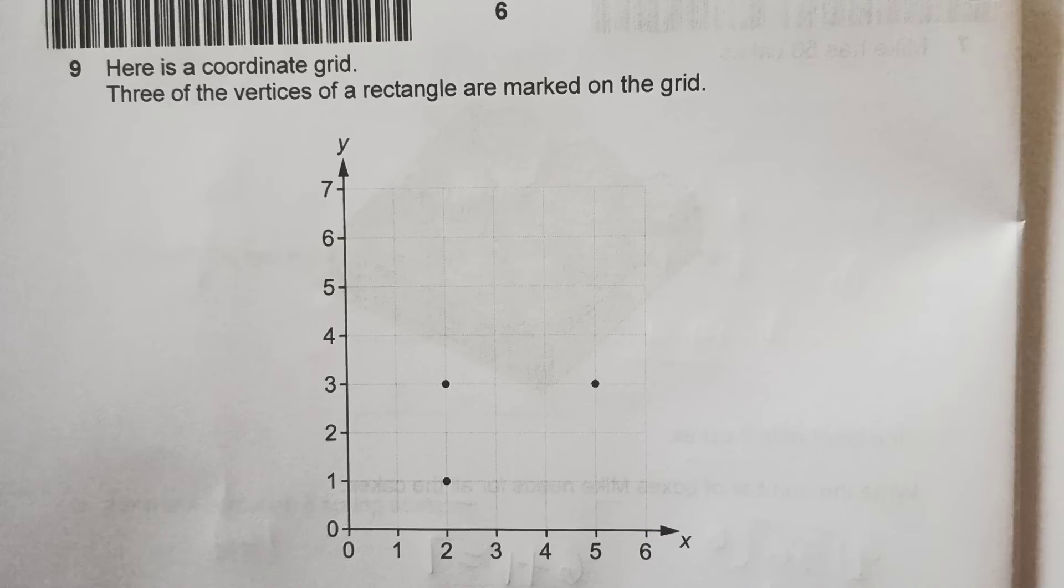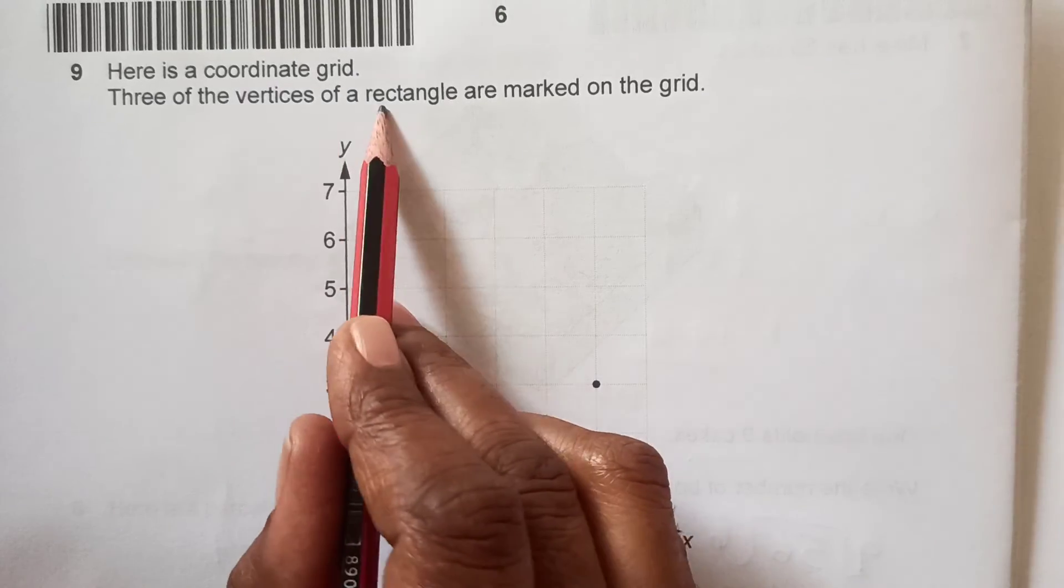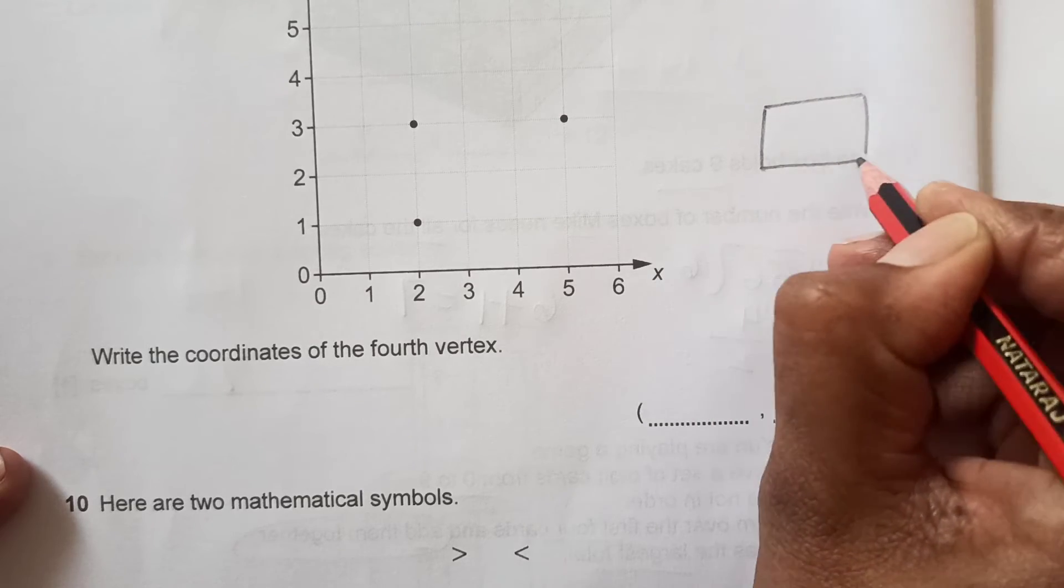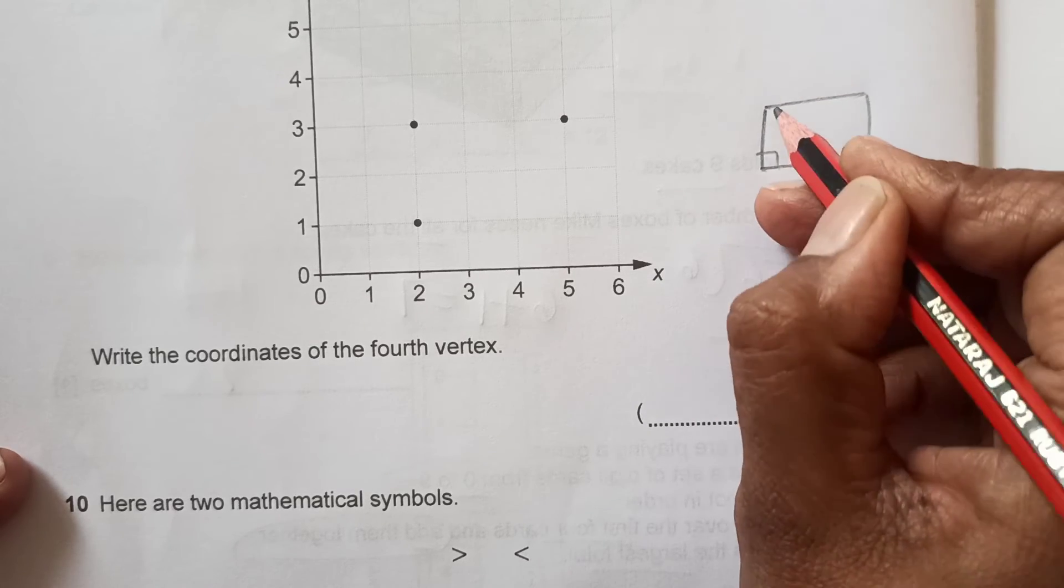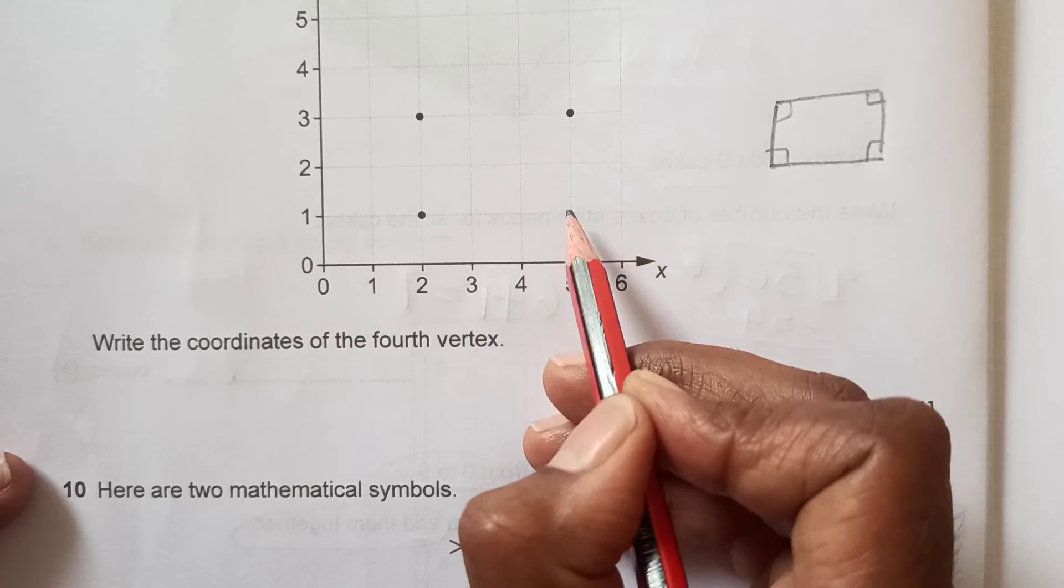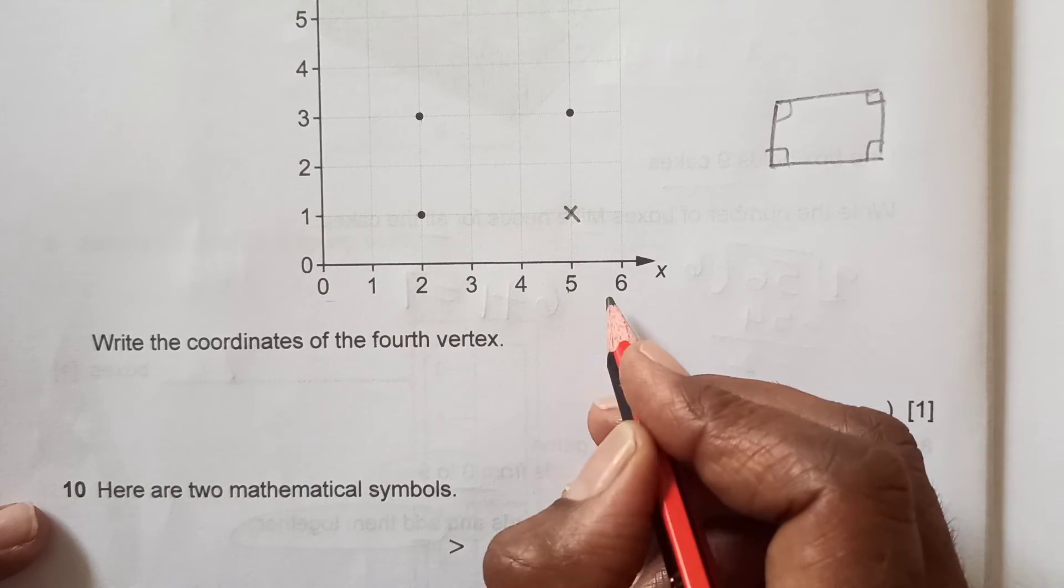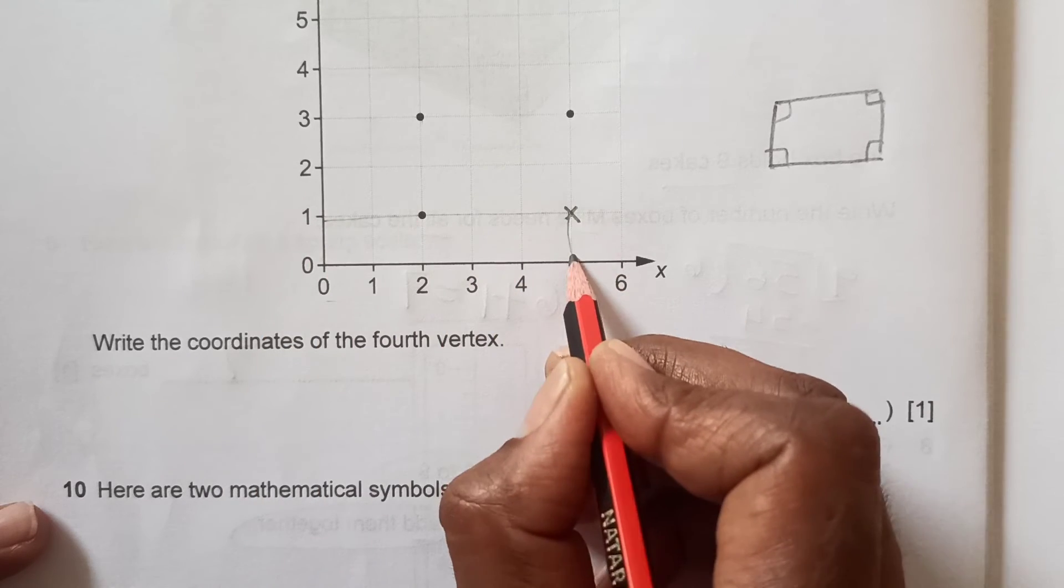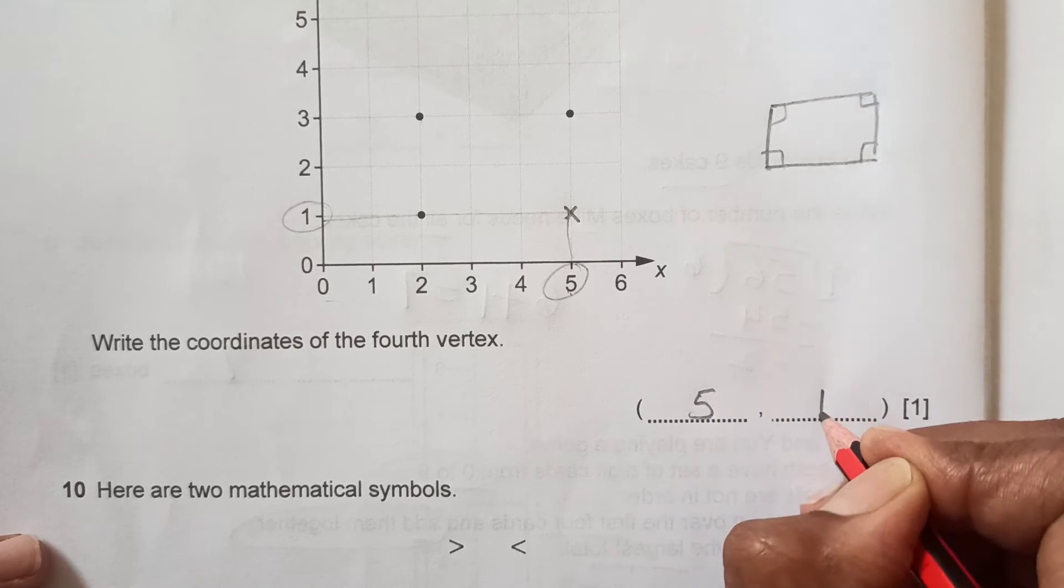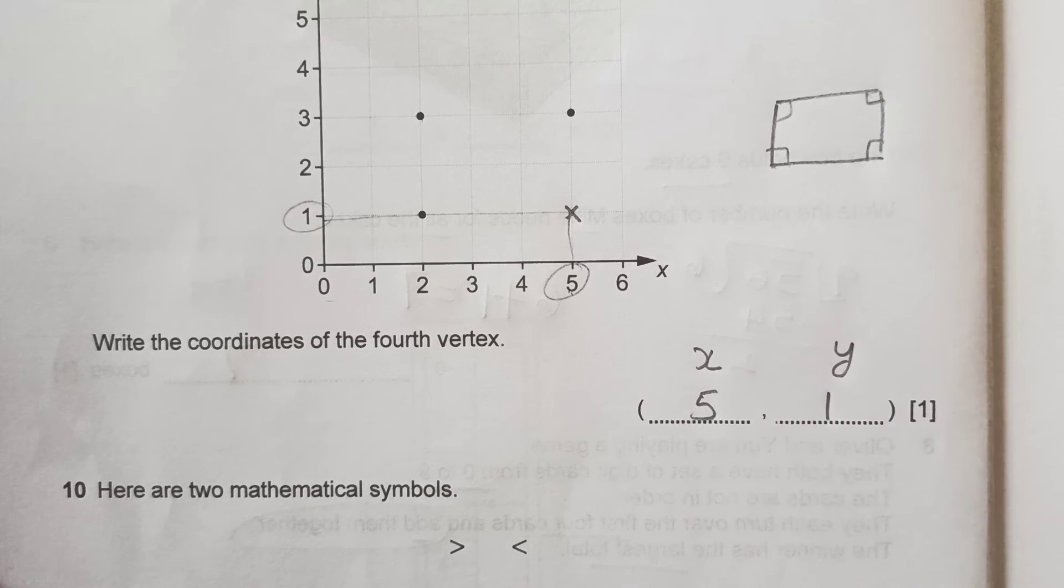Question 9: Here is a coordinate grid. There are the vertices of a rectangle marked on the grid. This is the rectangle - you know the rectangle is a shape like this having these right angles and opposite sides equal. Write the coordinates of the fourth vertex. You see 1, 2, 3, so the fourth vertex should come over here. What are the coordinates? First we are going to write x. x is 5, and you see x is 5 here and y is 1. So our answer is 5 and 1. Make sure you write first the x coordinate, then you write the y coordinate.